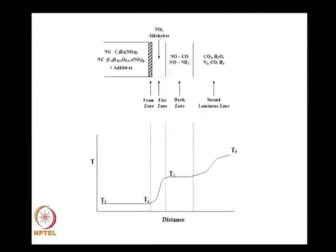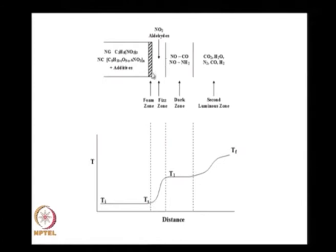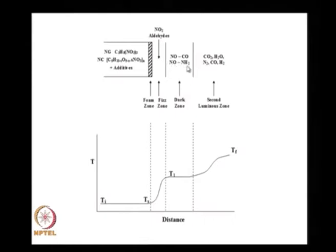For the case of double base propellants, we have nitrocellulose and nitroglycerine. We had NO₂, aldehydes, and other constituents which react, taking the temperature from the surface temperature to the temperature at the edge of the fizz zone. The foam zone is the preheated solid surface, and then the fizz zone where the temperature went to T1. Thereafter, it remained constant in the dark zone.